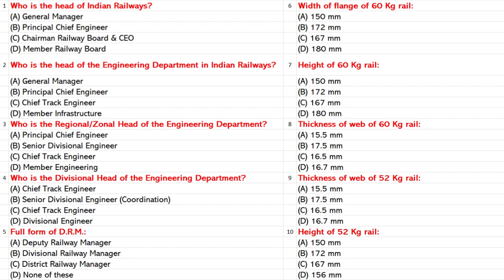Height of 60 kg rail: A. 150 mm. B. 172 mm. C. 167 mm. D. 180 mm. Answer: B. 172 mm.